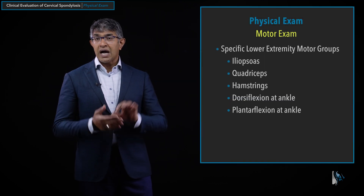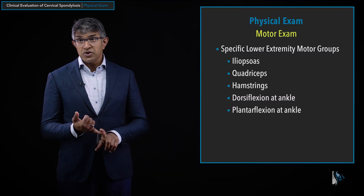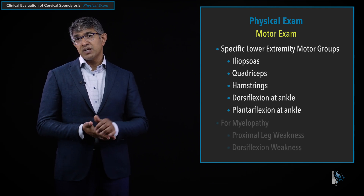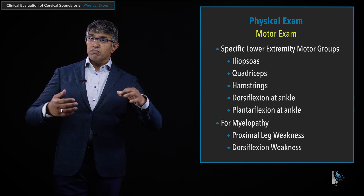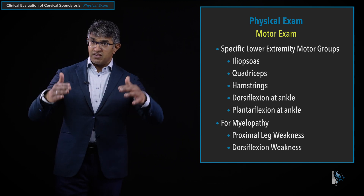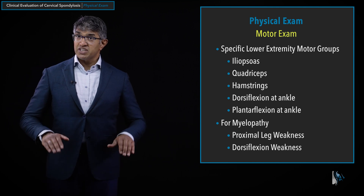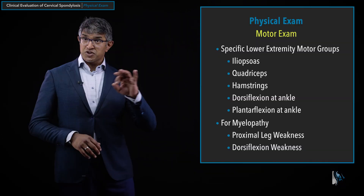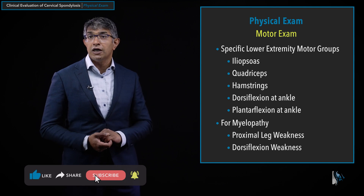I always evaluate the lower extremity as well, though more cursorily than in a lumbar spine evaluation. I look at iliopsoas, quadriceps, hamstrings, ankle dorsiflexion, and plantarflexion. People with myelopathy preferentially notice proximal leg weakness — difficulty going up steps or getting out of a chair — and dorsiflexion weakness, presenting as foot drop or slapping of the foot. These can be motor deficits as a manifestation of myelopathy from either the cervical or thoracic spine, so I look for them even in cervical evaluations.